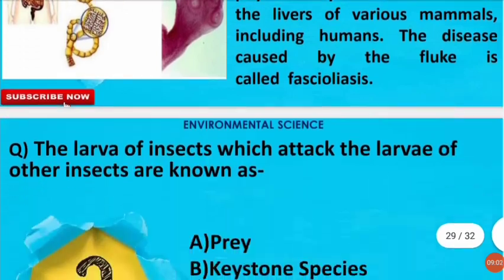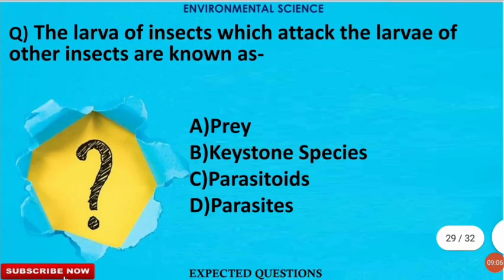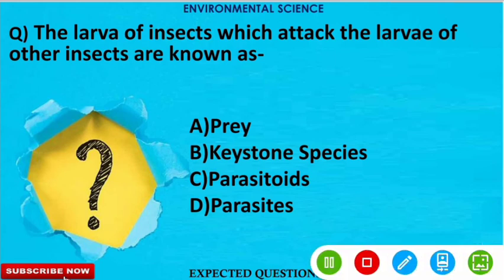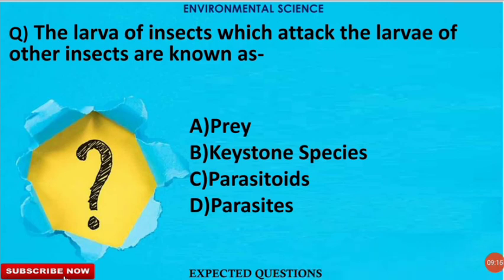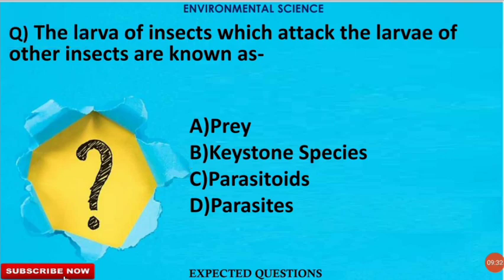The next question is: the larvae of insects which attack the larvae of other insects are known as what? The correct option is C — parasitoids. The larvae of insects that attack the larvae of other insects are called parasitoids; they are special kinds of parasites.